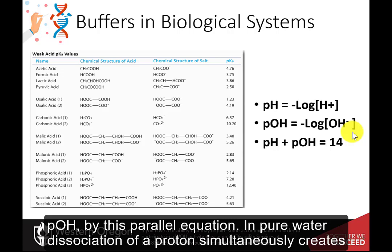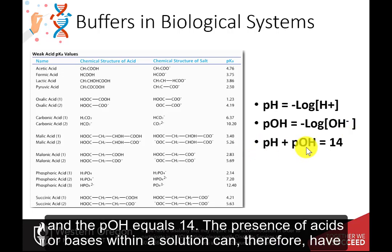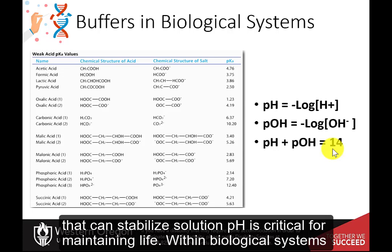We could just as easily measure the hydroxide concentration with the pOH. By this parallel equation, in pure water, dissociation of a proton simultaneously creates a hydroxide. So the pOH of pure water is 7 as well. This also means that the sum of the pH and the pOH equals 14. The presence of acids or bases within a solution can therefore have profound effects on the pH of a system. Thus, the importance of buffers within biological systems that can stabilize solution pH is critical for maintaining life.